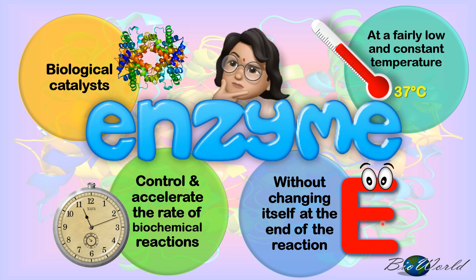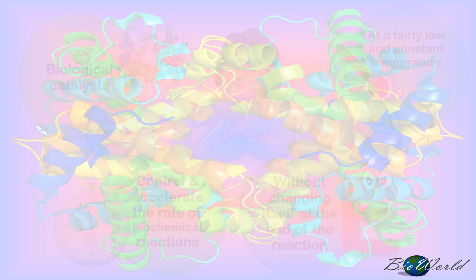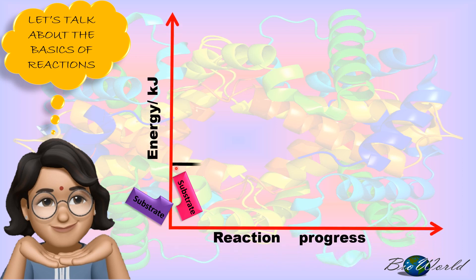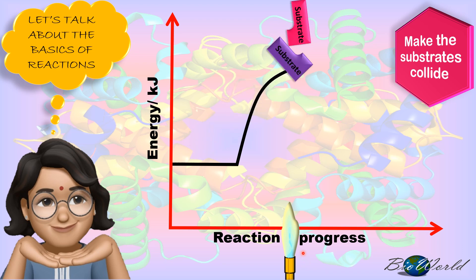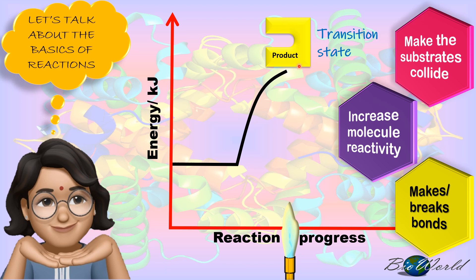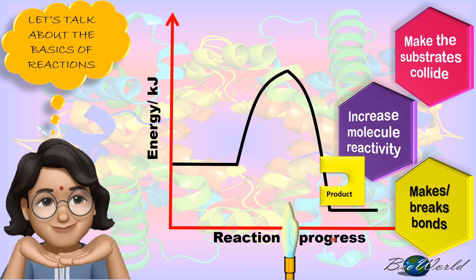But how do enzymes do this? Let's find out. Let's begin with the basis of a reaction. For a reaction to occur, we need substrates. Initially the substrates will have low energy levels. So to enable a reaction to happen, we introduce heat. When the substrate absorbs the heat, it increases its kinetic energy, enabling it to collide with one another. Once the substrates begin to collide with one another, it increases the molecule's reactivity. Substrates go into what we call a transition state. Once in a transition state, the bonds within the substrates break and new bonds form to produce a product, which then loses energy and returns to a low energy level.